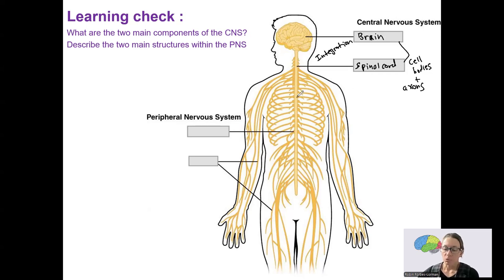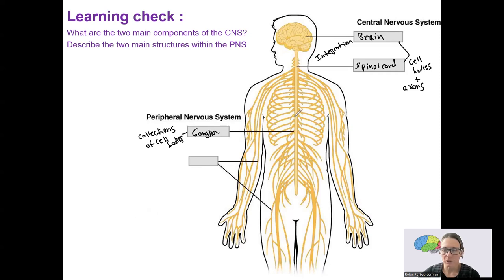We also then have a peripheral nervous system. The two components of this are ganglia — these are collections of cell bodies in the peripheral nervous system, so there are little bulges you can see coming off of the spinal cord — and then the other component is nerves. Nerves are collections of axons that are either going to travel to or from the central nervous system.